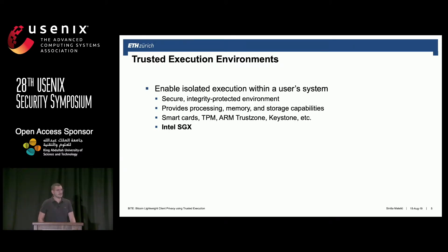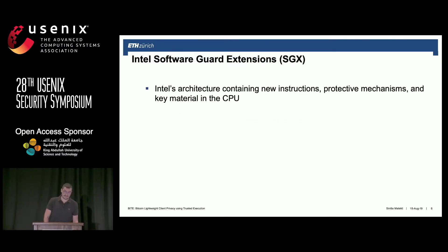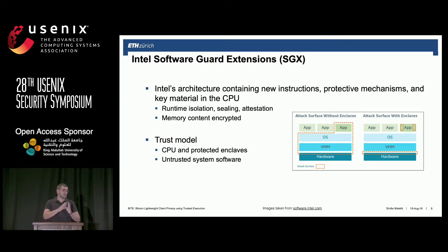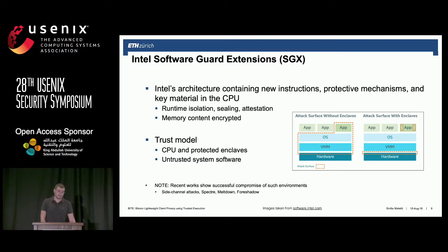Intel SGX is an architecture containing a set of new instructions, protective mechanisms, and key material in the CPU. It provides runtime isolation, full memory encryption of the enclave code, sealing to store data locally on disk, and attestation that enables you to verify that a specific enclave of protected code is running in an SGX environment. The trust model itself is just the CPU and the protected enclaves, separated from the untrusted system software including the OS. Recent work has also shown that these protective mechanisms can be bypassed, especially through side-channel attacks.